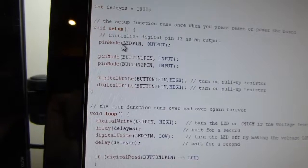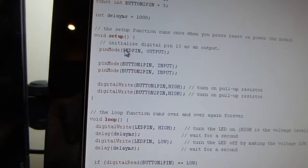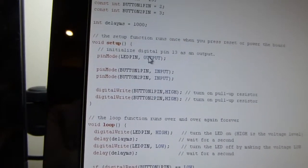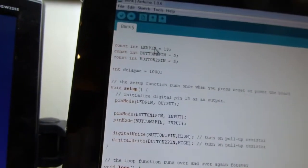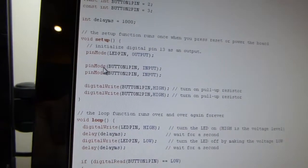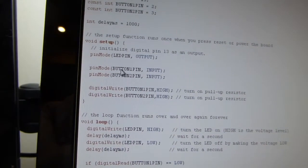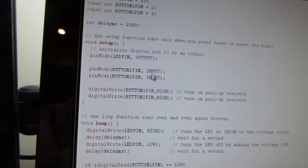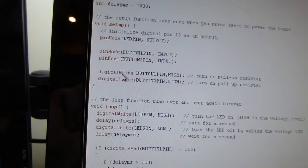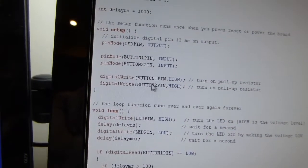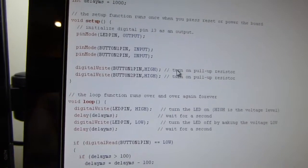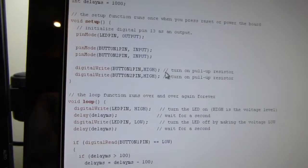Anyway so here's our setup program or setup function. We still have the same pin mode here except it says LED pin instead of 13 but LED pin is set to 13 up here. We've also added these two functions here pin mode button one pin and button two pin both set to input and then these two lines here digital write button one pin and button two pin to high as it says here turns on a pull-up resistor so which we talked about already.